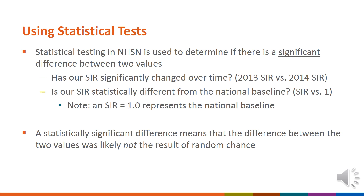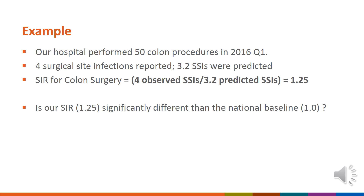If there is a statistically significant difference between two values, then the difference between those values was likely not caused by random chance. Let's walk through an example. Our hospital performed 50 colon procedures in the first quarter of 2016. There were four surgical site infections identified, and NHSN predicted 3.2 SSIs during that time period. We can calculate our SIR as 4 divided by 3.2, which results in 1.25.